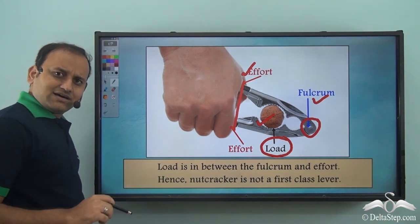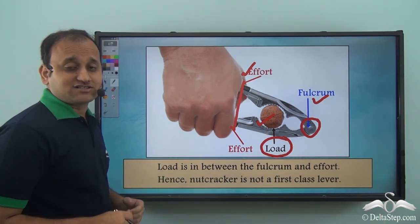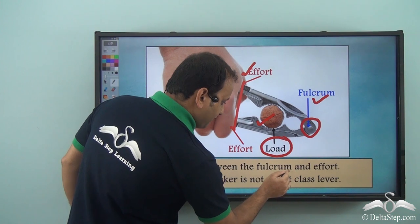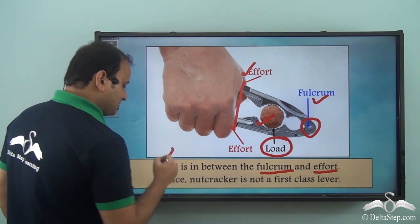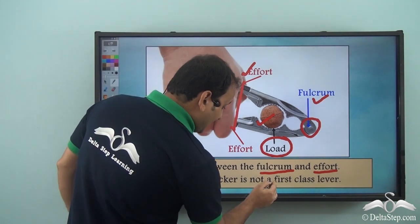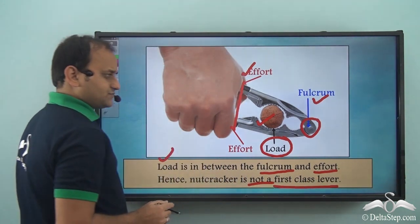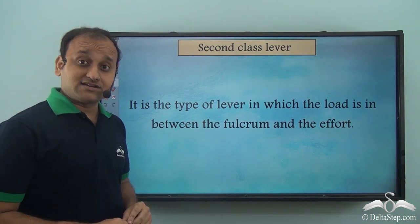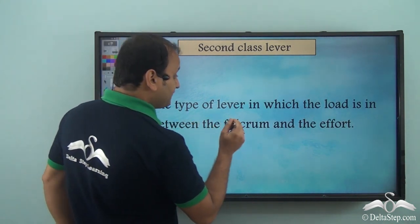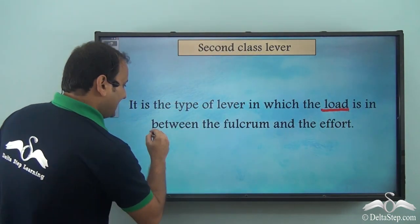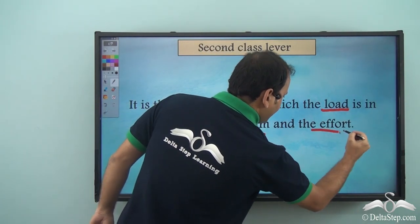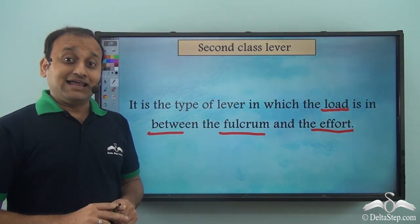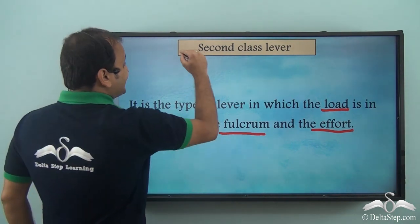Scissors had the fulcrum in the middle, and that's why we call it a first class lever. But in a nutcracker, the load is between the fulcrum and the effort — load is in the middle — and hence a nutcracker is not a first class lever. It is a second class lever. In a second class lever, the load is in between the fulcrum and the effort. Whenever the load is in the middle and the fulcrum and effort are on either side, that type of lever is called a second class lever.